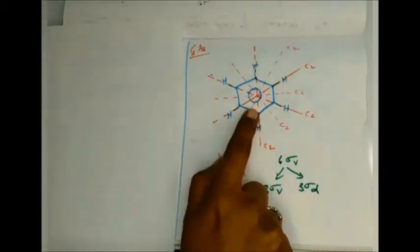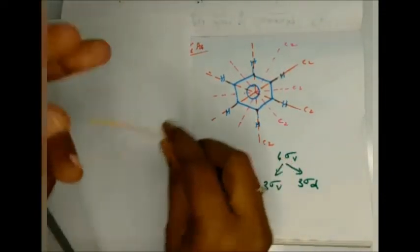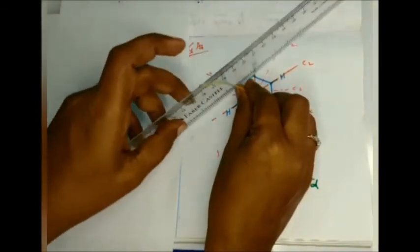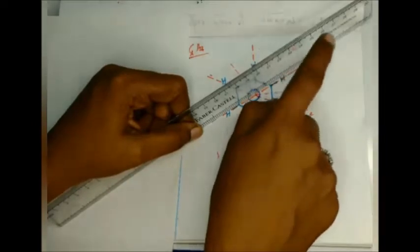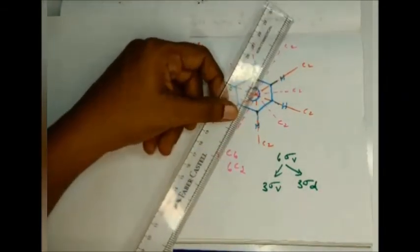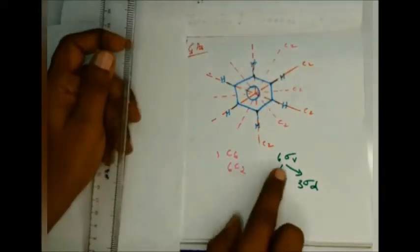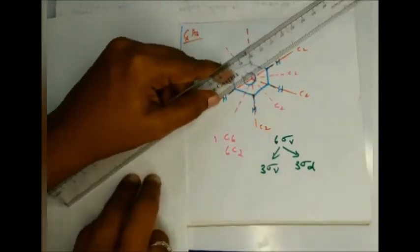This is the benzene molecule. The principal axis is the C6 axis, and there are 6 C2 axes. The sigma v planes are vertical planes containing the principal axis. One sigma v passes through hydrogen, carbon, carbon, hydrogen — 4 atoms — which are bisected. That is the first sigma v. There are 3 such sigma v planes.